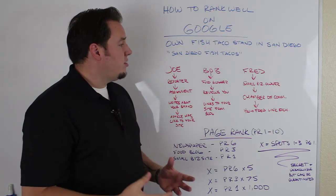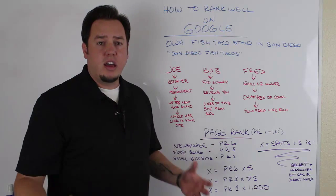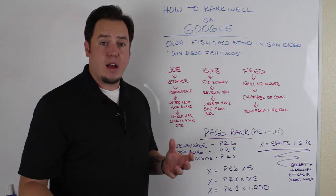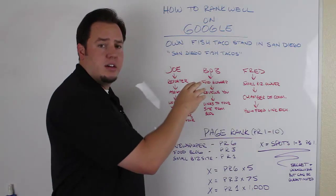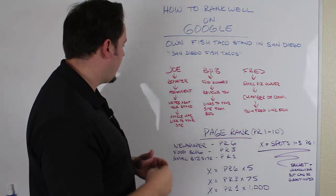So in order to do that, the way Google ranks you is based on incoming links. That's the primary and most effective way that they rank you. So in this example, I'm going over three guys here, Joe, Bob, and Fred, and they're each going to give you a link in this scenario.